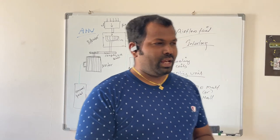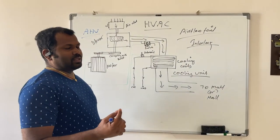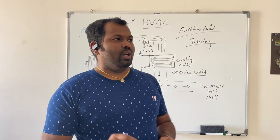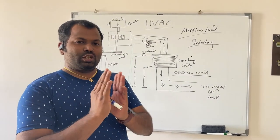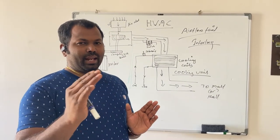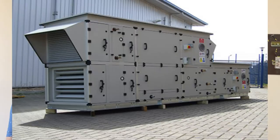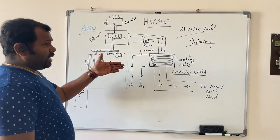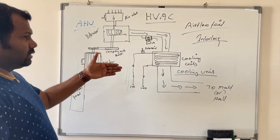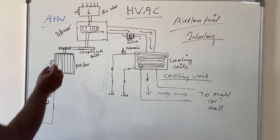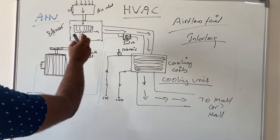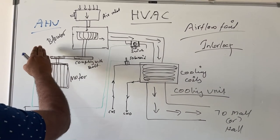Before going to the HVAC system, we will see how this air handling unit is working. This air handling unit, AHU, has two major parts. We have a diagram here showing the complete AHU system, and this system has two parts.